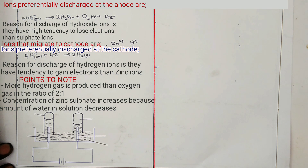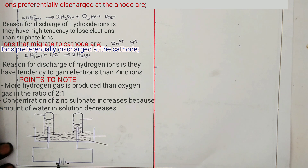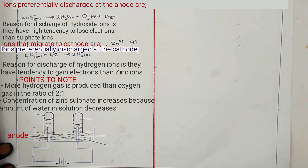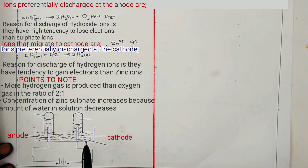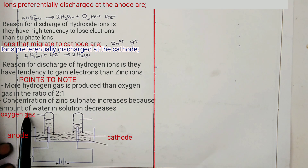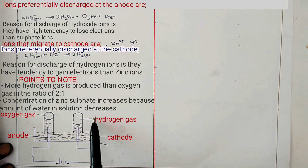The diagram shows the electrolysis of zinc sulfate. In the diagram, the longer line is positive and the shorter line is negative. The positive terminal is connected to the anode, and the negative terminal is connected to the cathode. At the anode, oxygen gas is produced; at the cathode, hydrogen gas is produced. Example two is the electrolysis of copper sulfate solution using graphite electrodes.